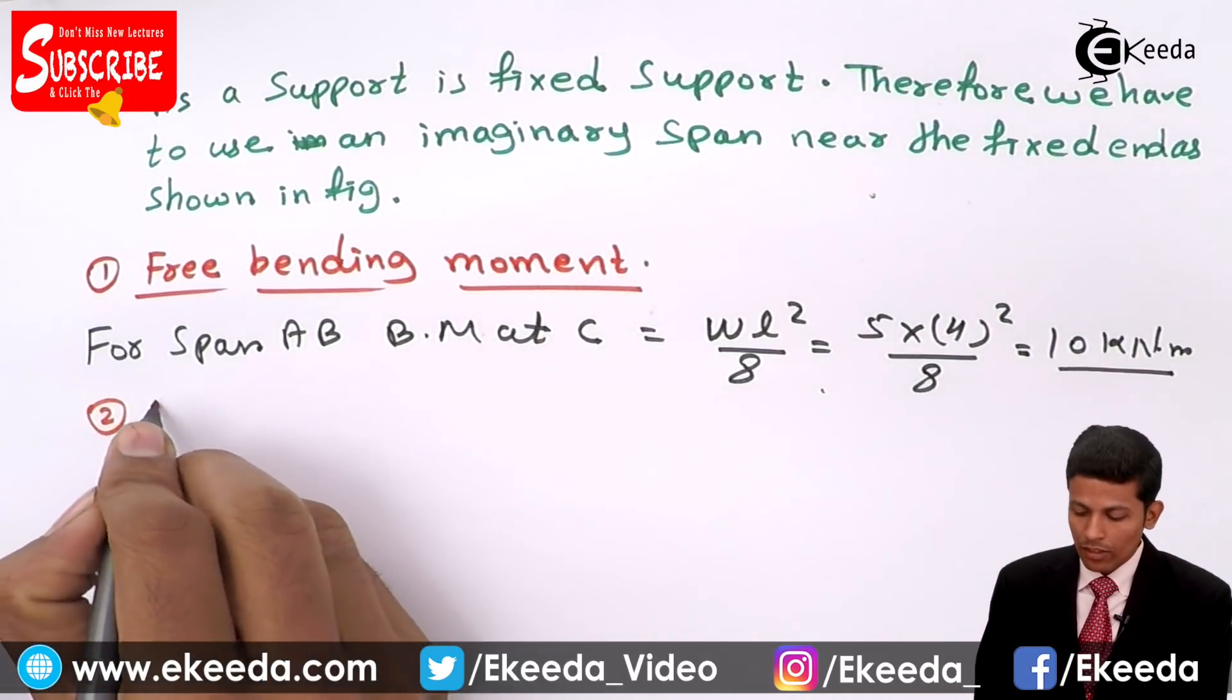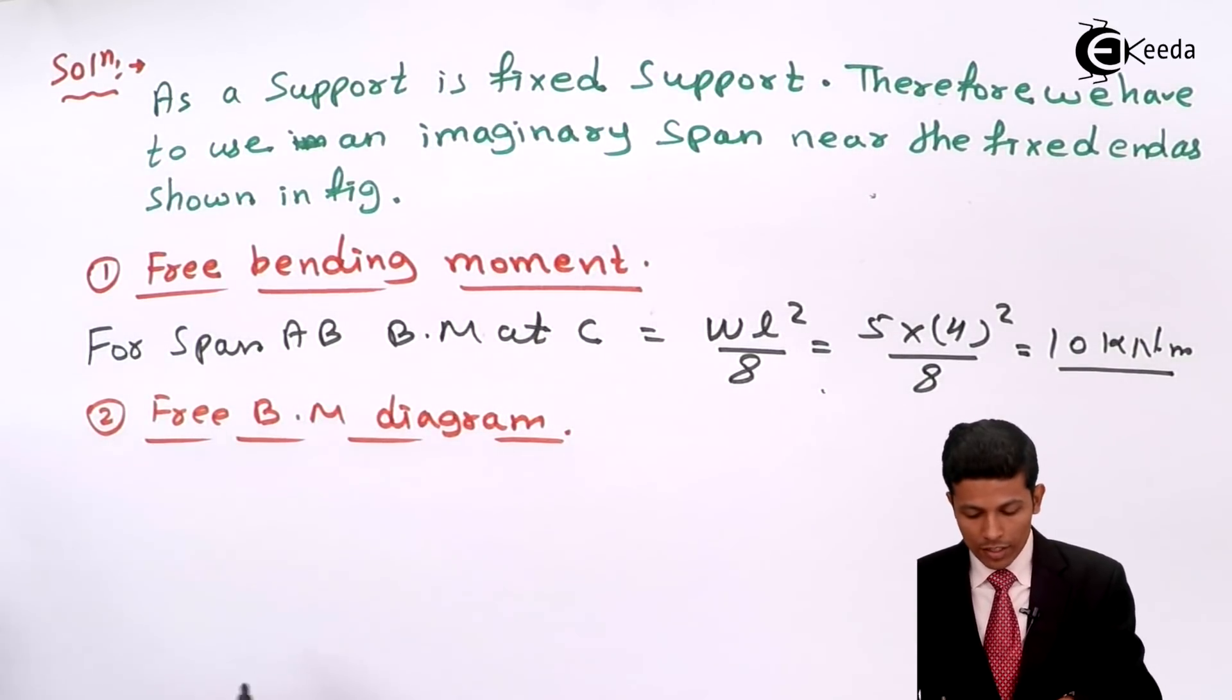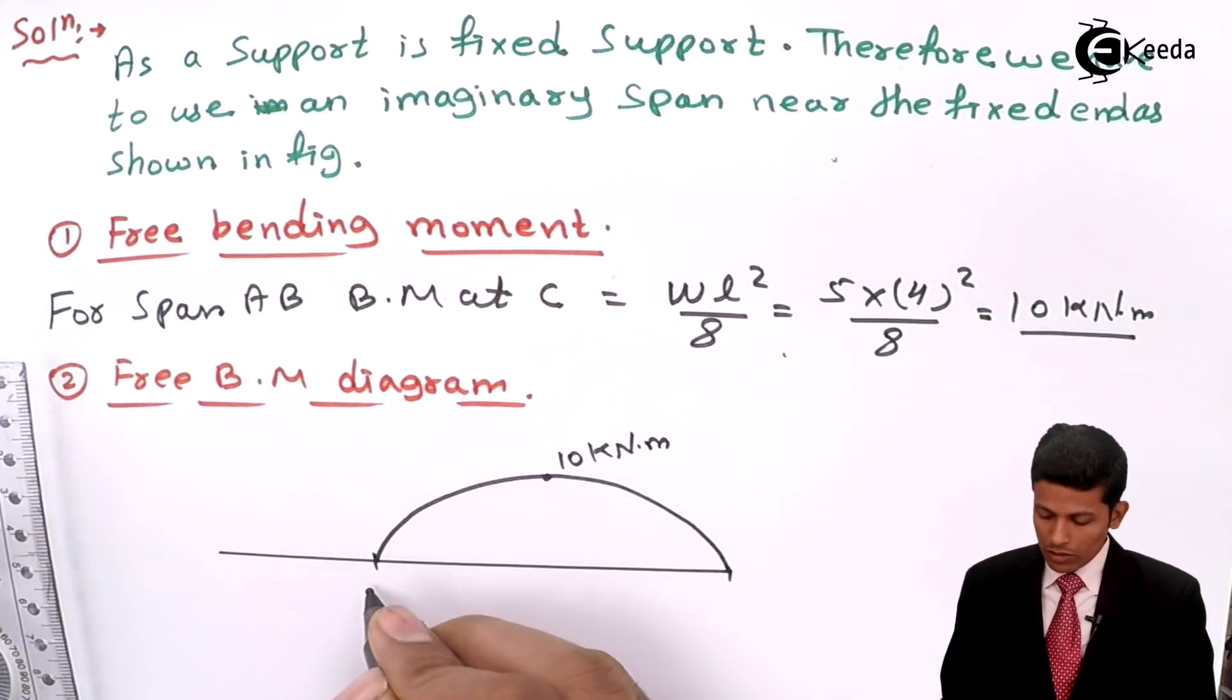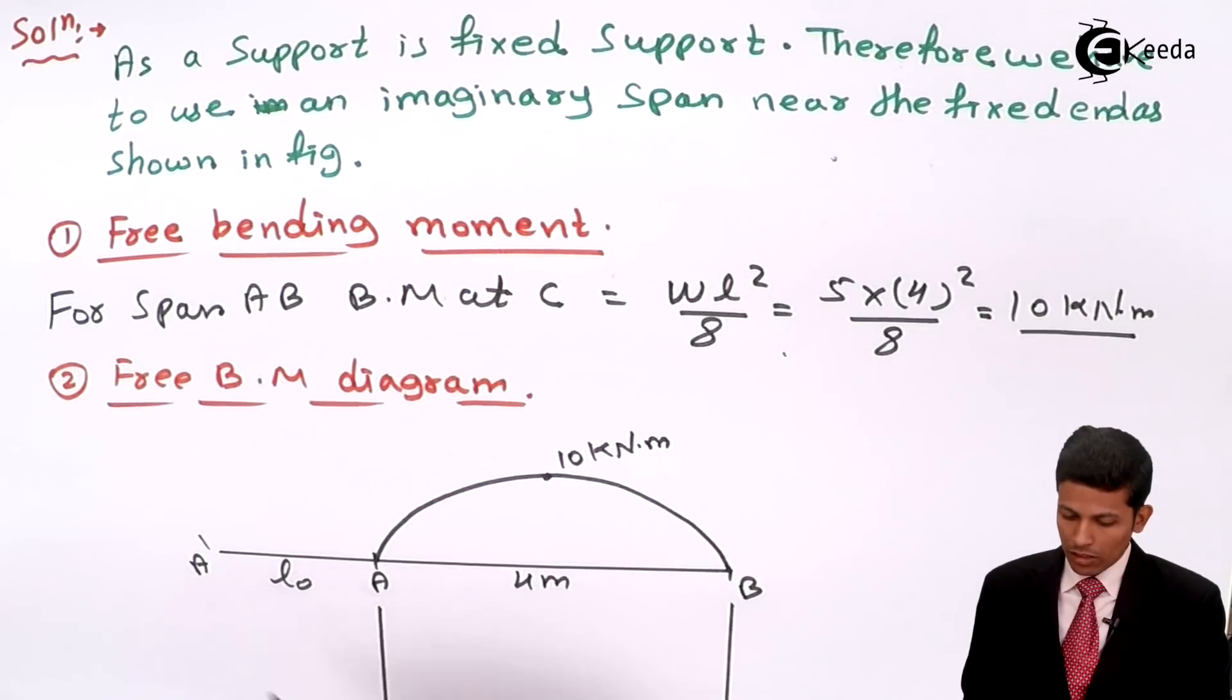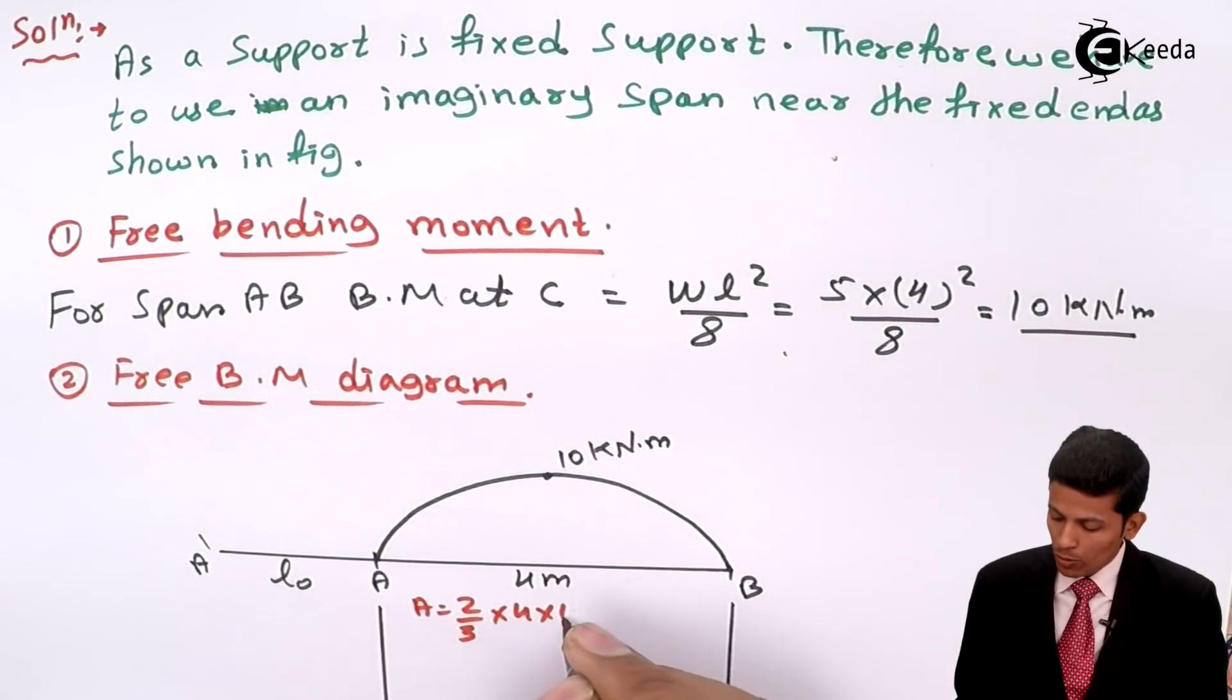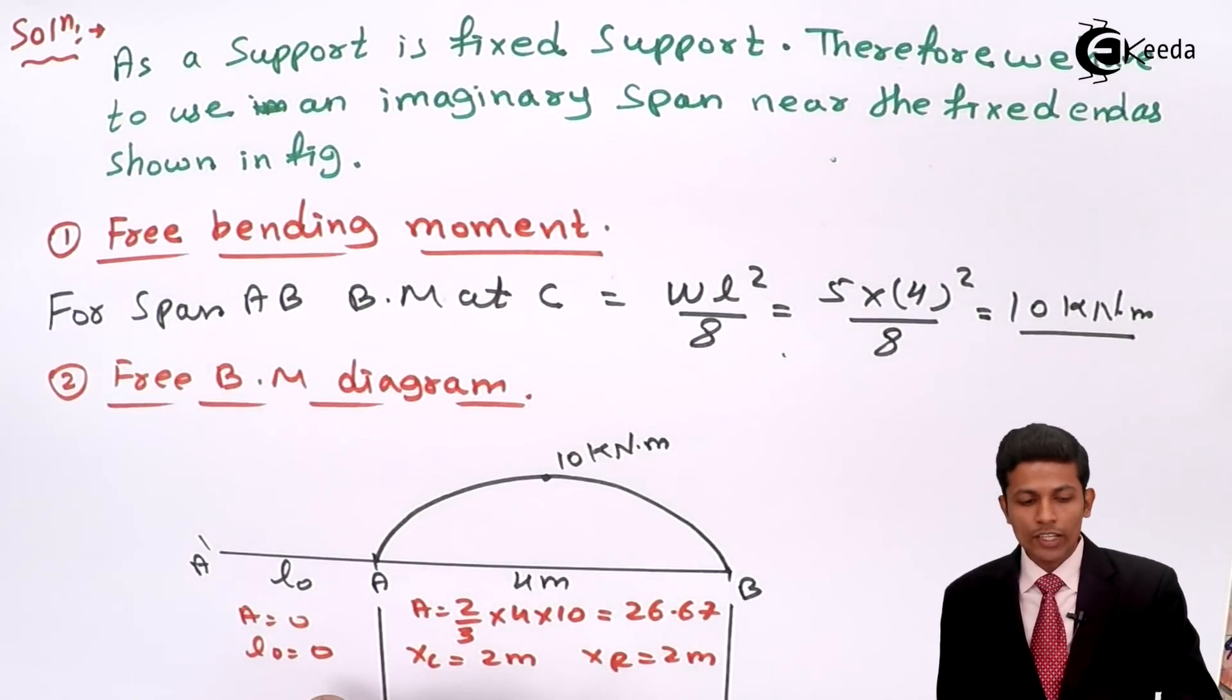Our next step will be free bending moment diagram. We have to draw free bending moment diagram. This is A, this is A dash, and this one is B. So we'll convert into two parts and find the area. Area will be 2 by 3 into 4 into 10 is equal to 26.67. XL will be 2 meter, XR will be 2 meter. Here also area will be 0, L0 will be 0. Length is also 0, area is also 0.